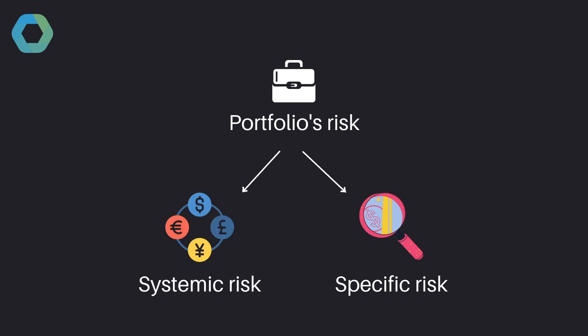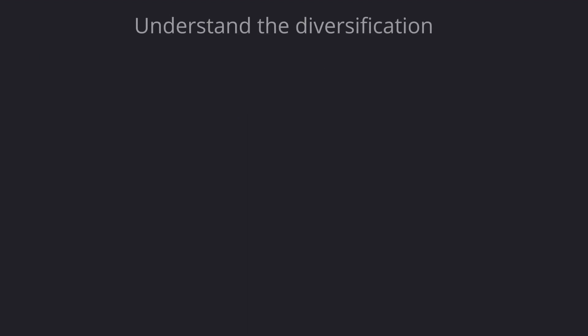The second is systemic risk, which is a risk that will affect all the assets of a specific sector or nearly the whole economy. For example, the subprime crisis had impacted a lot of assets because it had impacted all the economy. The goal of diversification is to reduce the portfolio's risk to systemic risks, because the specific risk of each asset will become insignificant.